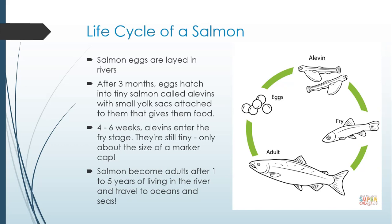After 1 to 5 years of living in the river, they become adults and travel to the ocean and seas. Then they return to the river to lay eggs. Salmon go to the exact same river where they were born and lay their eggs in the exact same place that they were born.